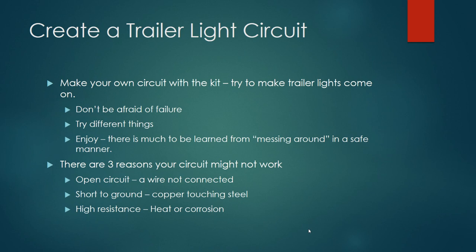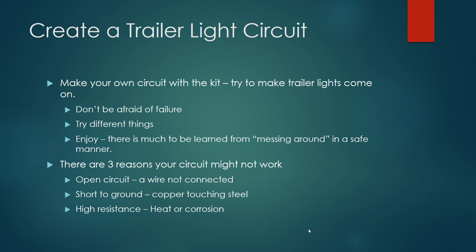When you are working with these DC light kits, you're basically trying to create circuits and make the trailer lights come on. These are very safe kits, so I encourage you to try different things and think through where the electricity is going while you do it. There are a couple of basic things that will help you think through electricity: one is that it always travels in a circuit, and the second is that electricity — much like teenagers — follows the path of least resistance. What you're creating is the least resistant path for the electricity to flow.